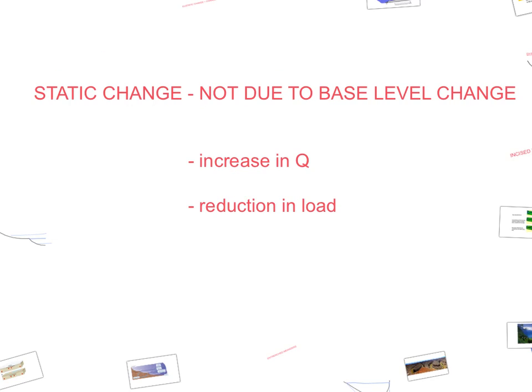The final cause of rejuvenation is static change. This may be due to an increase in discharge, which can occur due to climate change. An increase in precipitation would bring more flow to the river and therefore more energy, resulting in greater erosion. Similarly, a decrease in load allows more energy to be used for erosion.